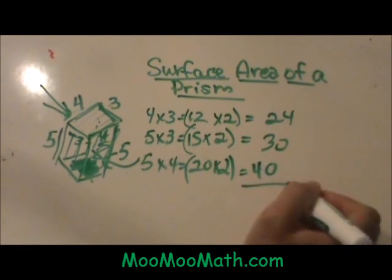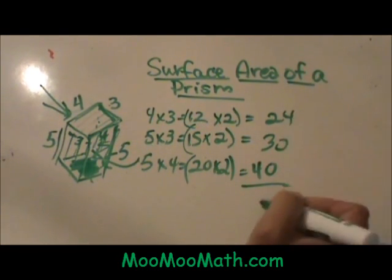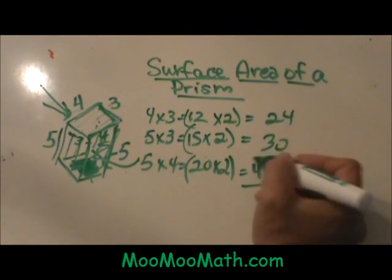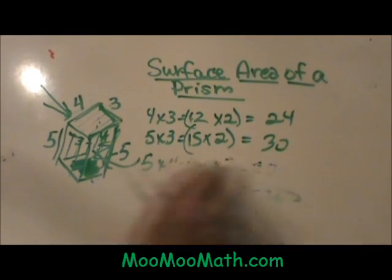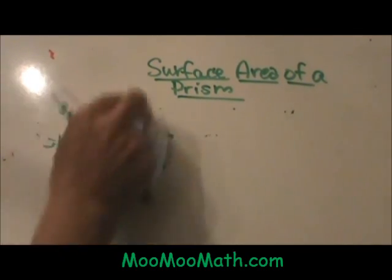Now to find the surface area, I am just going to add these up. So that is going to be ninety four, and since this is area, it is unit squared. So there is one option when you just have a rectangular prism to find the surface area.